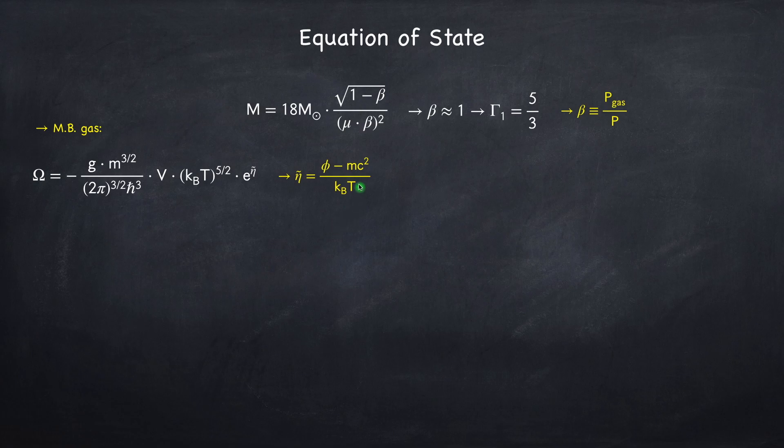So it's the chemical potential, which is phi, minus the mass, divided by the temperature. This is why it's called the kinetic degeneracy parameter, because we've subtracted off the mass.